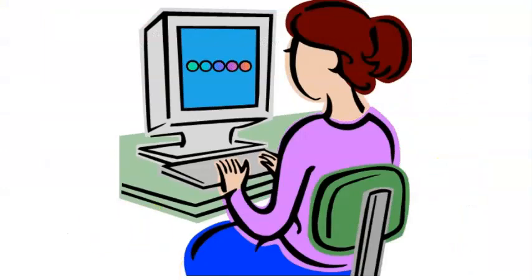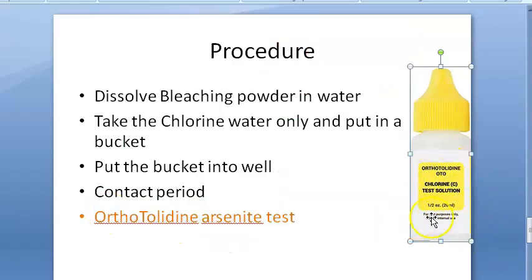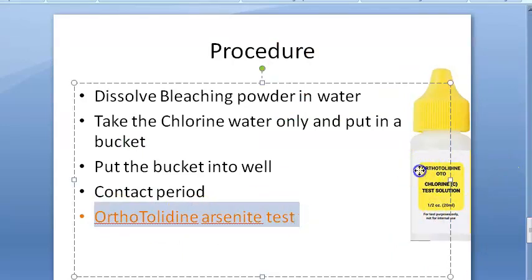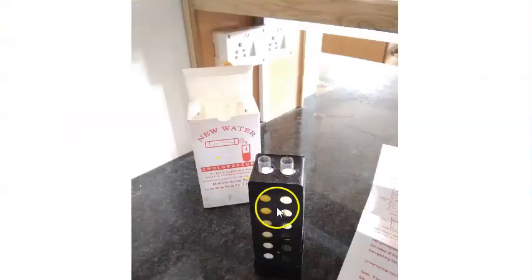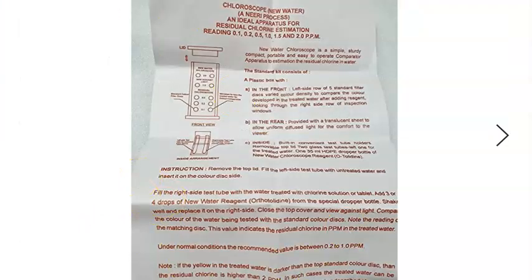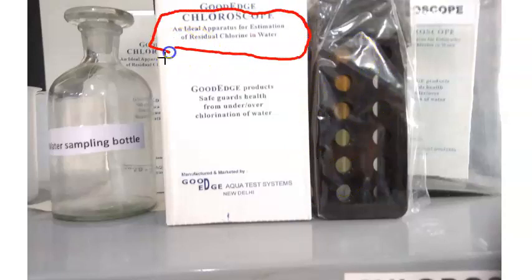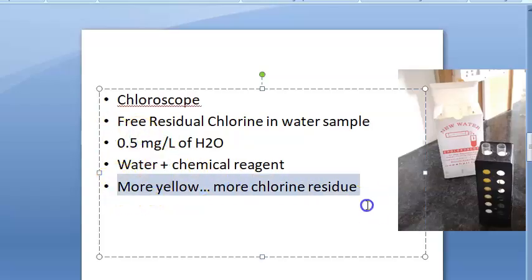There is something called the orthotolidine arsenide test to check the amount of free residual chlorine. The chloroscope is the apparatus used for this — you color-match it to check the result. More yellow color indicates more chlorine residue, making it an ideal apparatus for estimation of residual chlorine in water.